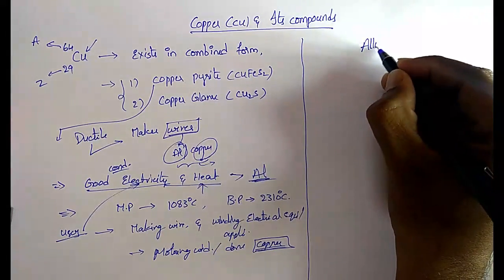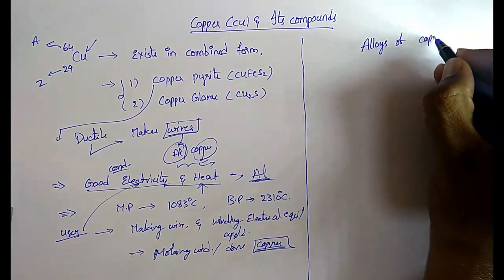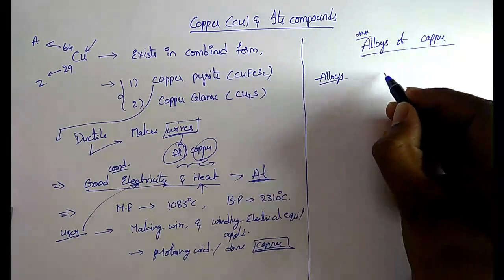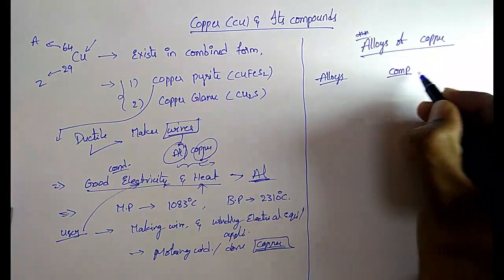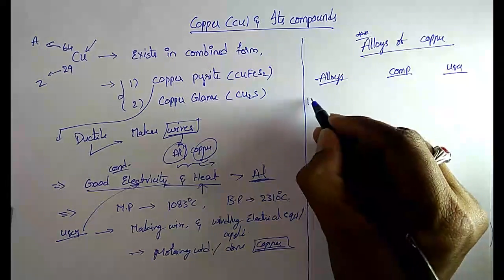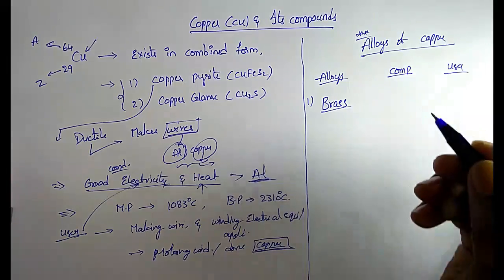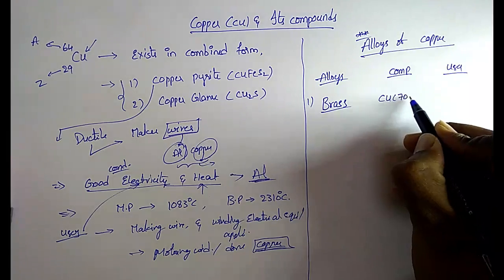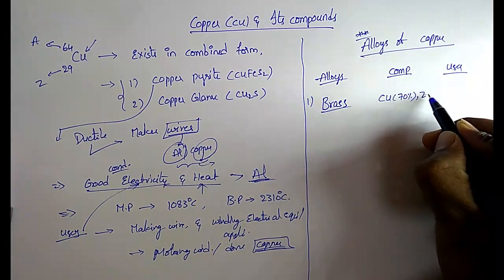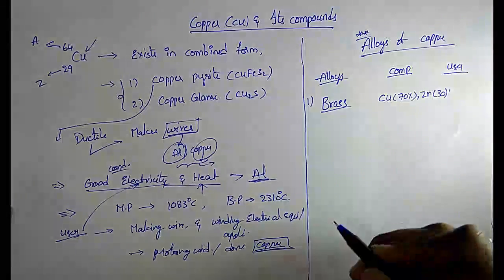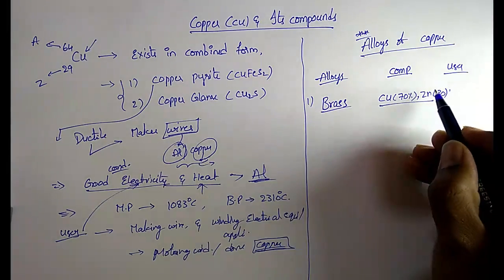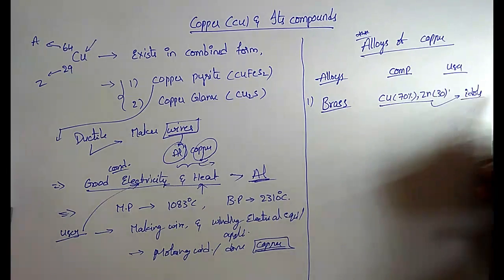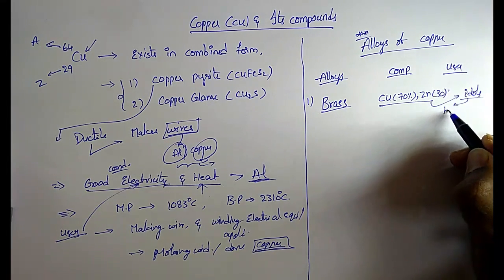The important alloys of copper with their composition and uses are very important. The first one is brass. In brass, copper is 70% and zinc is 30%. Brass is used to make idols and household utensils.